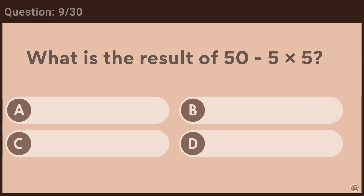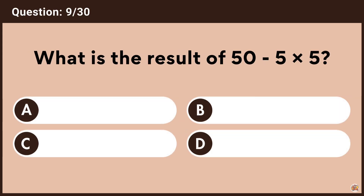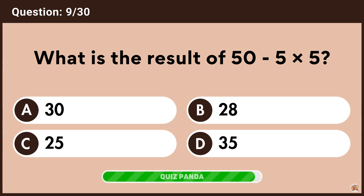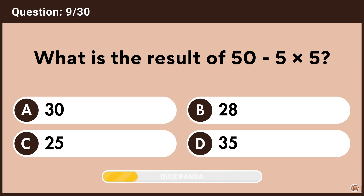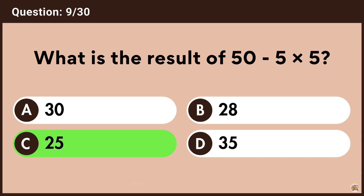What is the result of 50 minus 5 multiplied by 5? Answer C, 25.